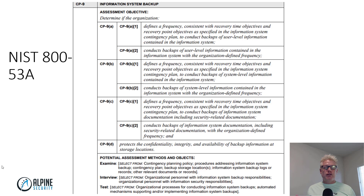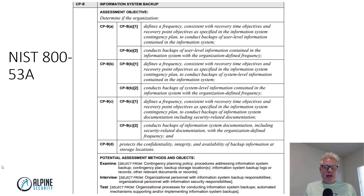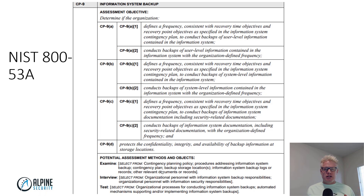Here's an excerpt from NIST 853A. You can see it tells you how to do an assessment of a control — in this case, information system backup — and it walks you through the process. This methodology can be applied to any control. At the bottom, it gives you the assessment methods and objectives: you can examine, interview, and test. Typically when you do an audit, you need artifacts from a combination of those to substantiate that the controls are actually working.